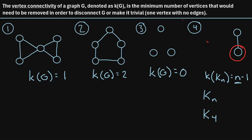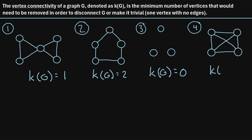The last step is to remove one of the remaining vertices. If we do that, we're left with just one vertex — a trivial graph with one vertex and no edges. So we did have to remove three vertices from that graph, confirming that the vertex connectivity was three. Those were just a few quick examples of how to find the vertex connectivity of a graph.